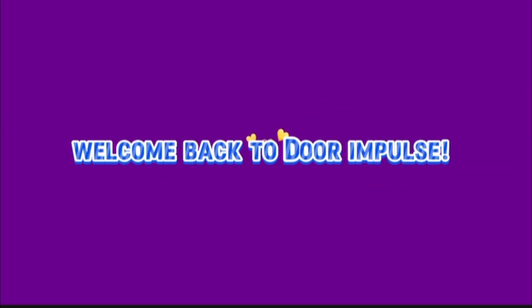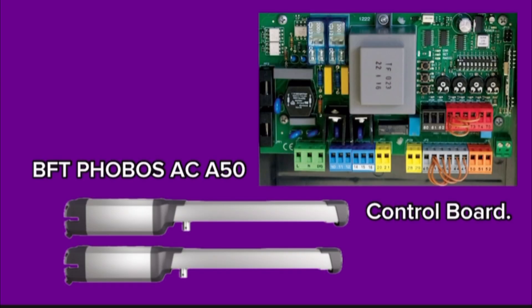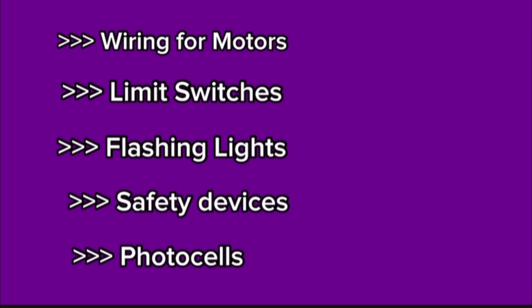Welcome back to Door Pulse. In this video, I'll explain how to correctly wire the BFT Phobos ACA50 swing gate opener using this control board. This guide includes wiring for motors, limit switches, flashing lights, safety devices, photocells, and more. Let's begin step-by-step.